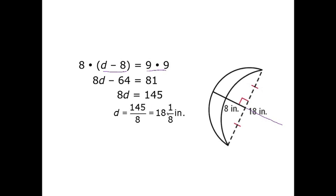So that tells me that D is approximately, or is exactly 18 and one-eighth of an inch for my diameter of the circle, the original circle that they'll need to develop in order to create this moon.